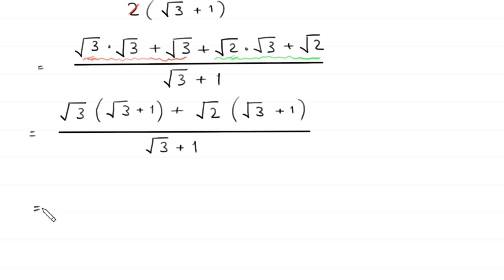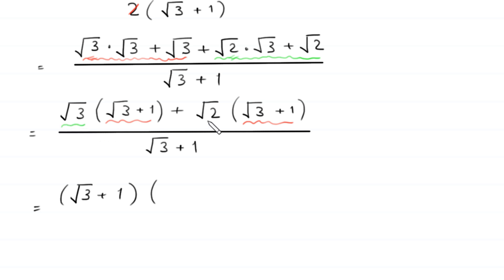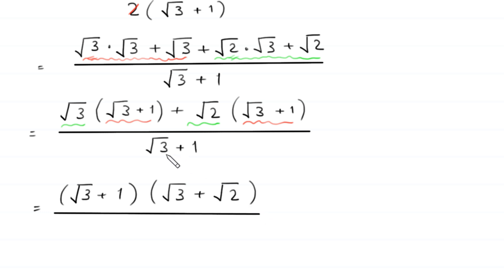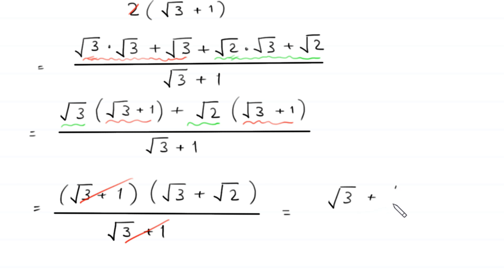In the numerator, square root of 3 plus 1 is a common factor, so we factor it out, leaving square root of 3 plus square root of 2 in brackets. Now, the square root of 3 plus 1 in the numerator cancels with the square root of 3 plus 1 in the denominator, and we are left with only square root of 3 plus square root of 2. This is the simplest form and the final answer.